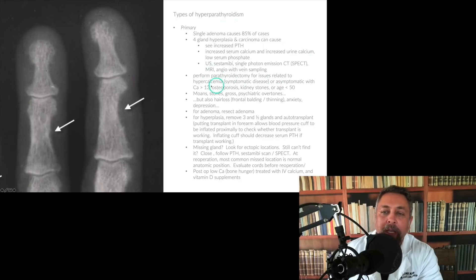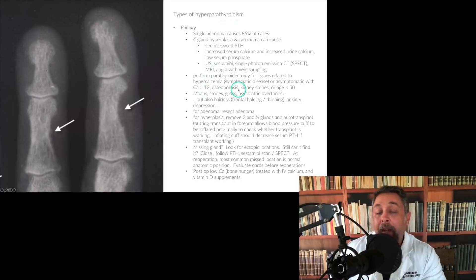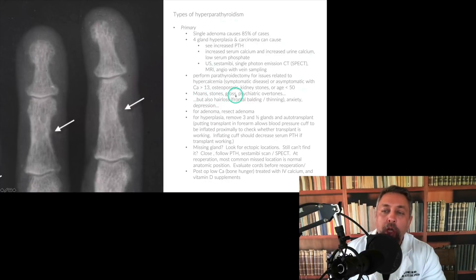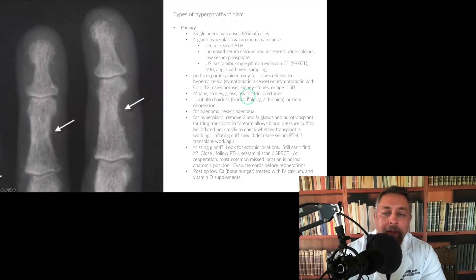Parathyroidectomy is indicated for primary hyperparathyroidism if patients have symptoms, or if asymptomatic but calcium is over 13, or if they have osteoporosis or kidney stones, or if they are young with a long life ahead. The classic mnemonic: moans, stones, groans, and psychiatric overtones. There are also subtler findings like frontal balding, hair loss, thinning hair, anxiety, and depression — the psychiatric overtones of hyperparathyroidism.